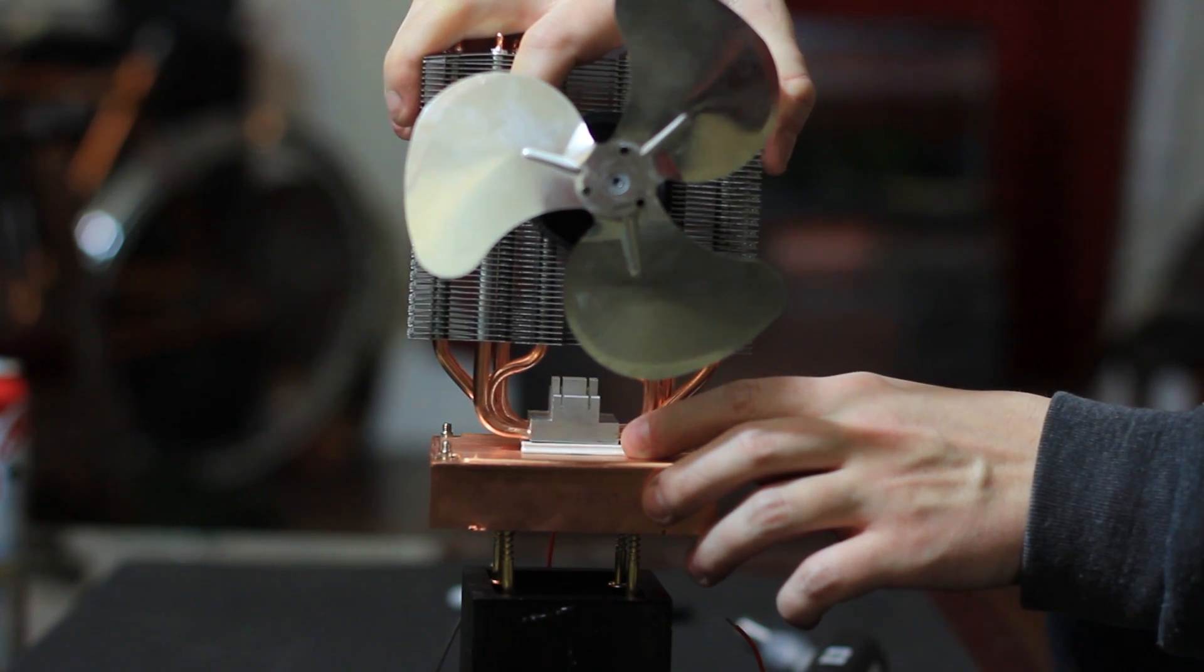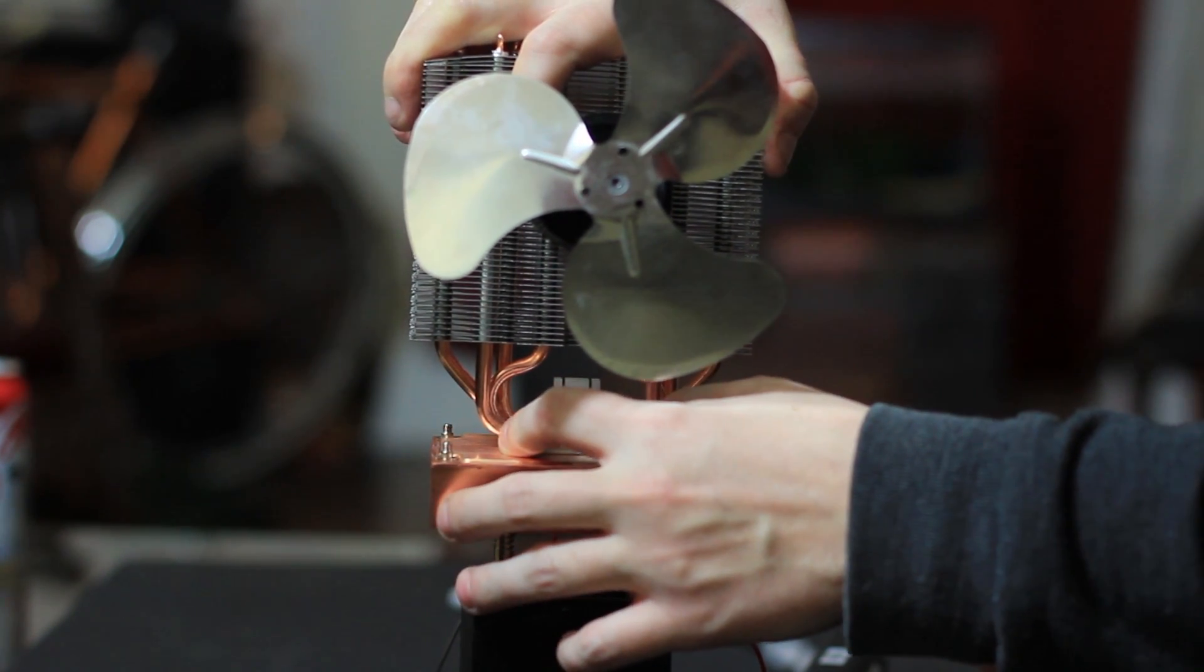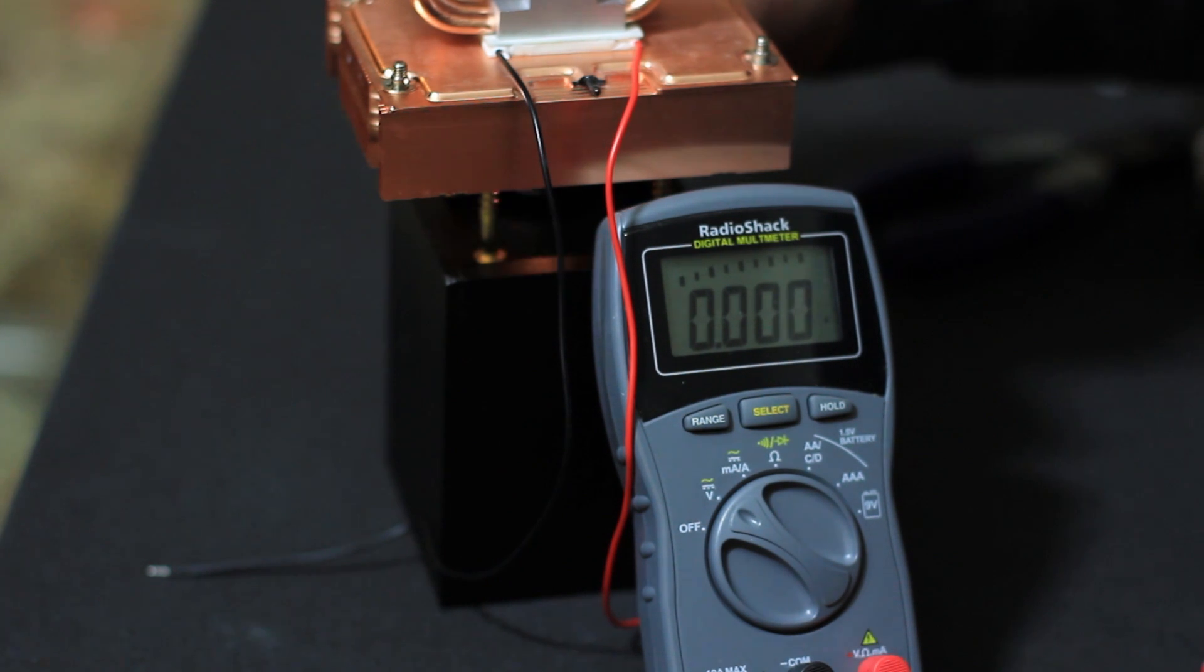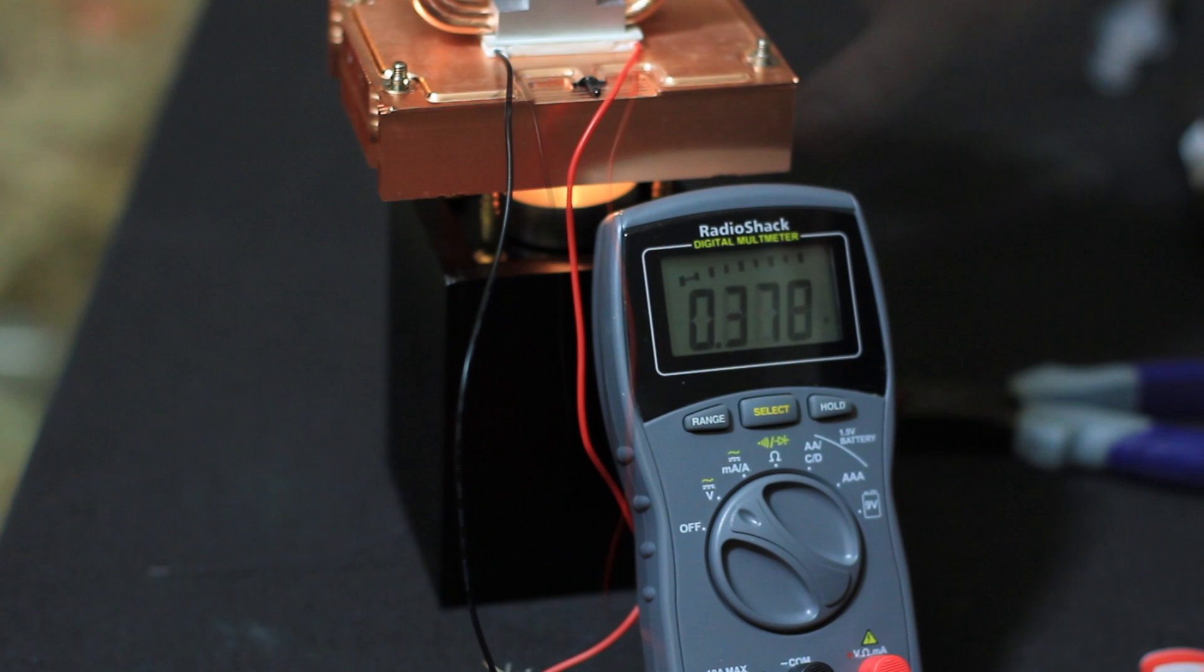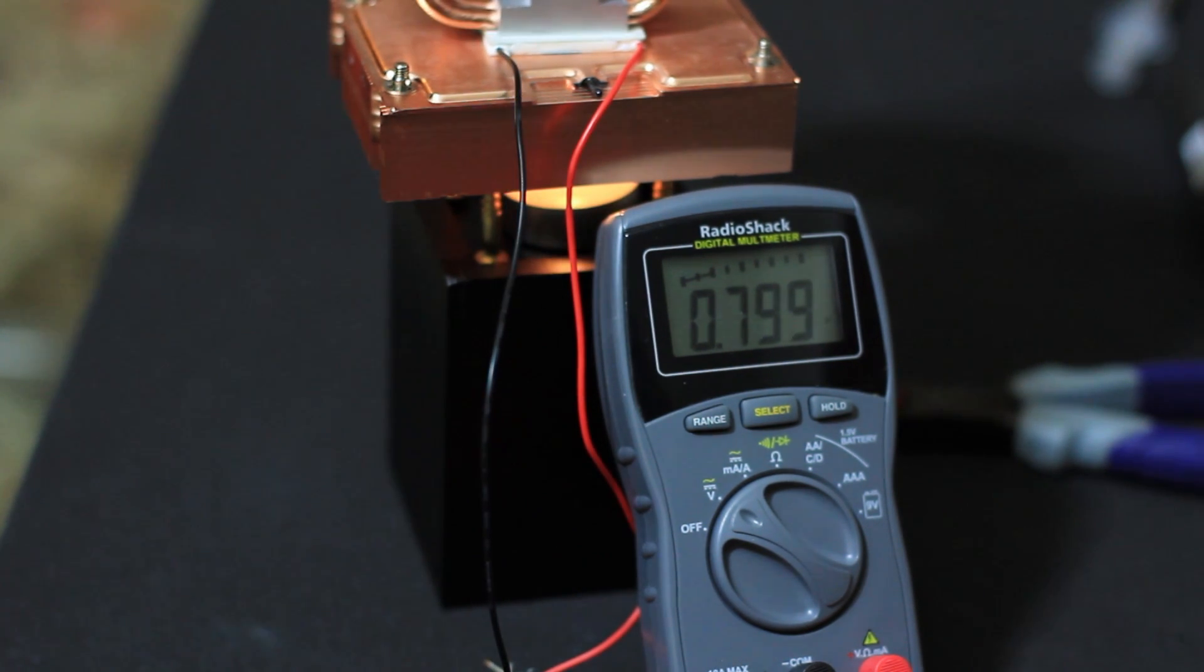Before I run the fan, let's take a look at the power that gets generated. I hooked up my multimeter and put some flame under the heat sink. You can see that the power starts to generate right away. Now we need about one volt to power the motor. And about five minutes after I started, that's when we got there. The sweet spot was hit.